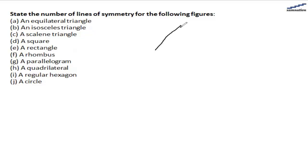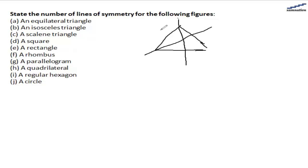An equilateral triangle means all sides are equal. The first line of symmetry will be along this vertex, the second line of symmetry will be like this, and the third line will be like this. So, there are three lines of symmetry in this equilateral triangle.